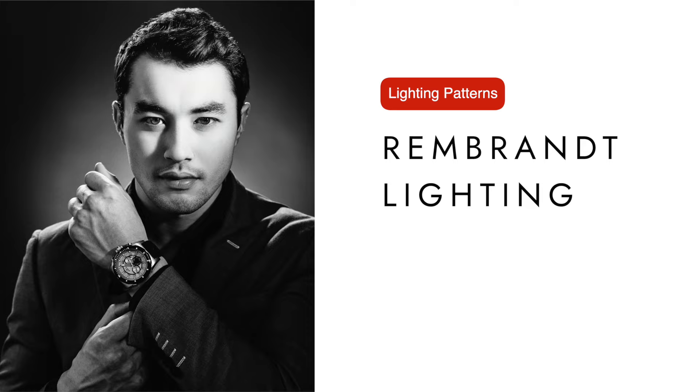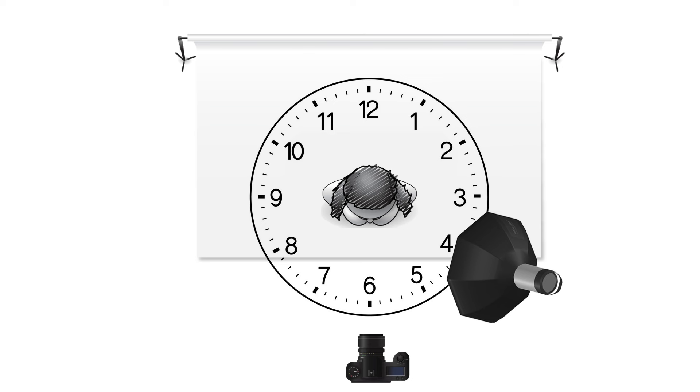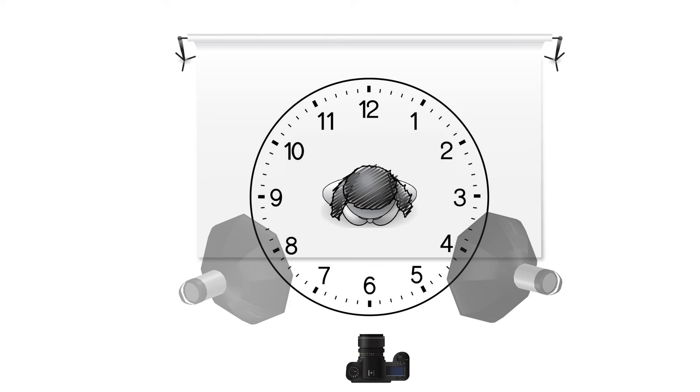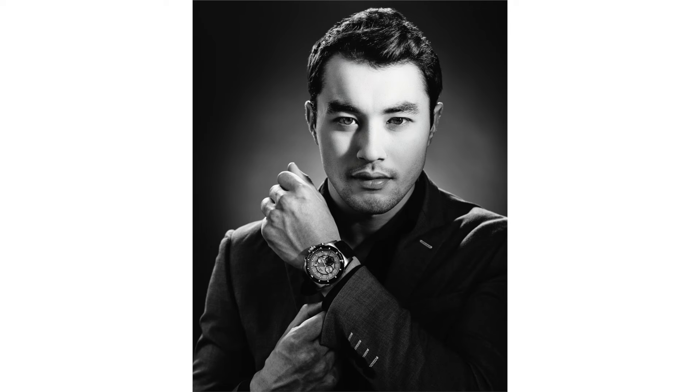Rembrandt lighting is named after the Dutch painter Rembrandt van Rijn, and it's achieved by placing the light closer to 4 or 8 o'clock. The light source should be far enough away to allow the shadow from the subject's nose to extend towards the shadow from their cheekbone. This technique also results in an upside-down triangle-shaped light patch under the eye opposite the main light. While not suitable for all faces, Rembrandt lighting offers a captivating and artistic look that I personally love, and I use it frequently alongside loop lighting.